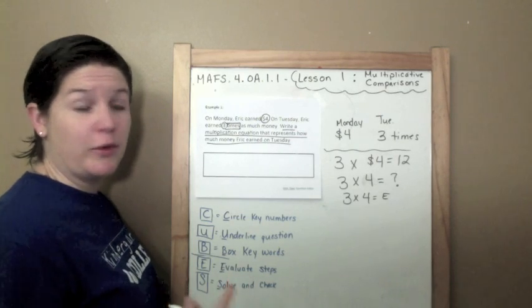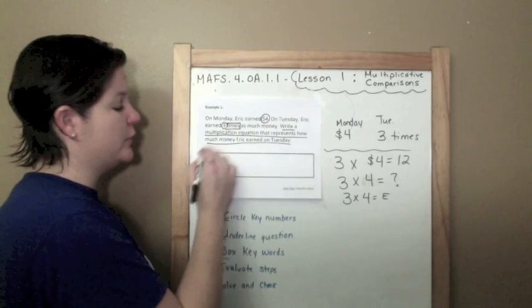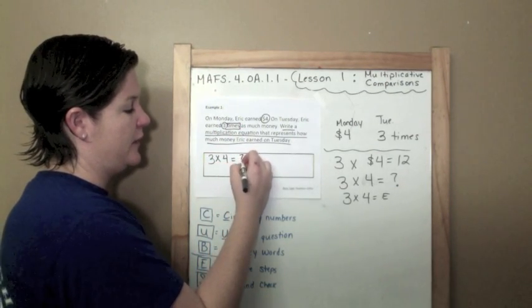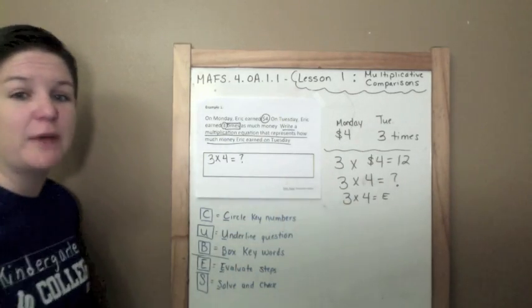So I'm going to choose to write this one: three times four equals question mark. Notice I stay within the box, and none of my work goes inside the box.